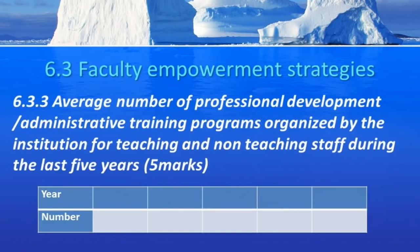We go to the next metric, 6.3.3 — average number of professional development and administrative training programs organized by the institution for teaching and non-teaching staff during the last five years. Here, what is the effort of the organization and management to ensure that the staff is continuously being updated? These updates can be very small but very important.